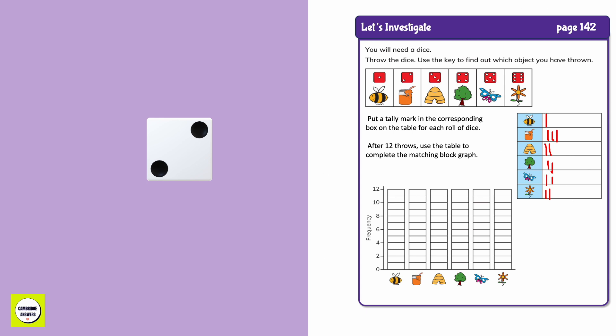When we are going to make the block graph, we are going to see how many times we rolled a 1. We see that we have rolled a 1 once. So we are going to color just 1 box.